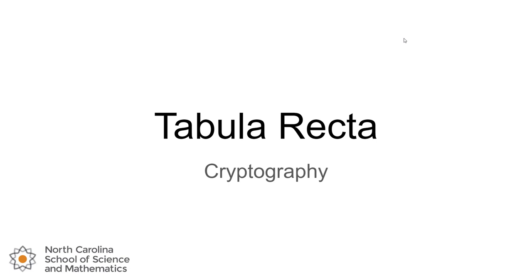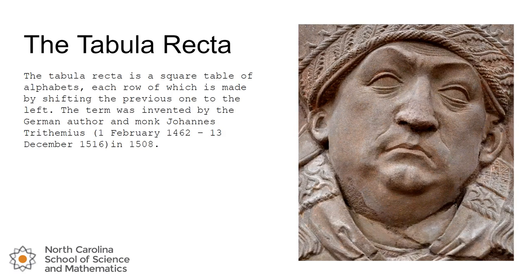The primary tool we're going to be using in all of our polyalphabetic ciphers is known as a tabula recta. The tabula recta is basically just a square table with a bunch of different alphabets in it — all English — but they're offset from each other from one row to the next. This term was invented by a German monk, Johannes Trithemius, and we'll see that one of the ciphers we're going to cover is named after Johannes.